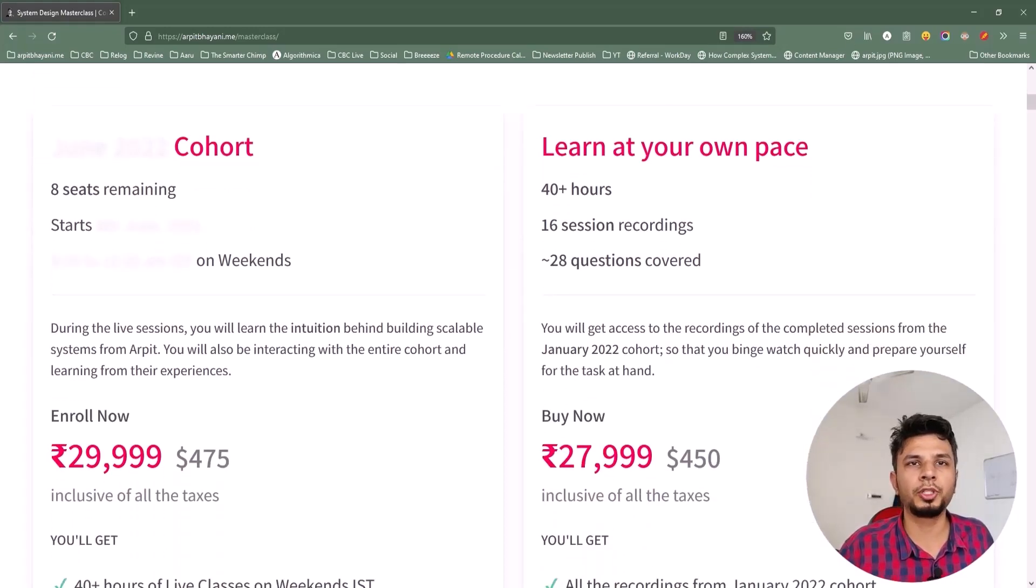So if you are looking to learn system design from the first principles, you will love this course. I have two offerings for you. The first one is the live cohort-based course which you see on the left side and the second one is the recorded course which you can see on the right side. The live cohort-based course happens every two months and it will go on for 8 weeks while the recorded course contains the recordings from one of the past cohorts as is.